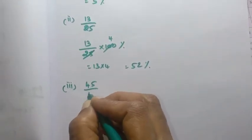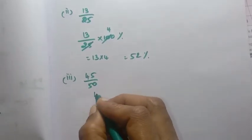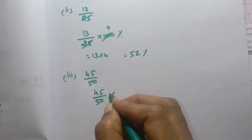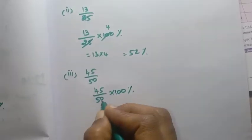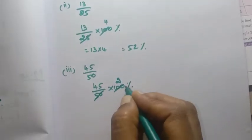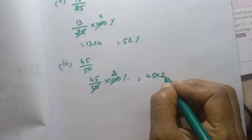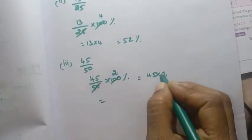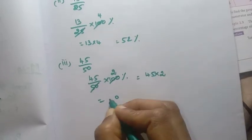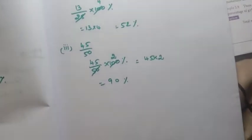Third sum: 45 by 50. Percentage = 45 by 50 into 100. 50 times 2 is 100. So 45 into 2: 5 twos are 10, remainder 1; 4 twos are 8 — equal to 90 percentage.